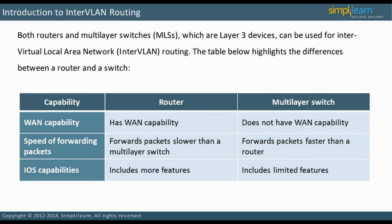A router IOS has more features than an MLS IOS, for example firewall or intrusion prevention. However, an MLS normally forwards packets faster than a router.